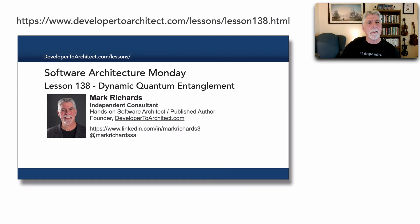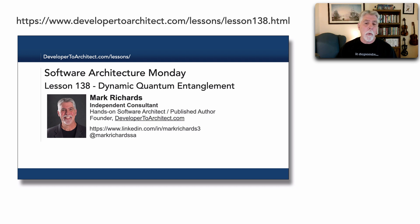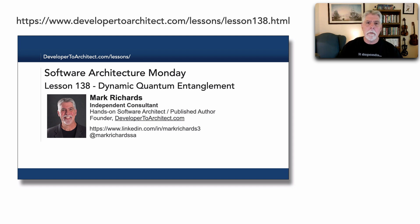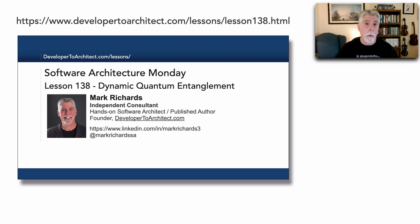Going back to lesson 138, I talked about the architectural quantum concept and also something called dynamic quantum entanglement — how we tend to entangle systems unknowingly, creating dependencies between them. In this lesson I'm going to offer a quick review of that architectural quantum but show you some of the trade-offs involved with using or forming architectural quanta.